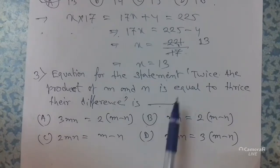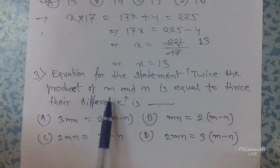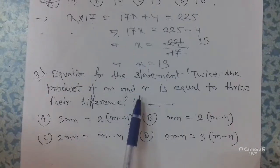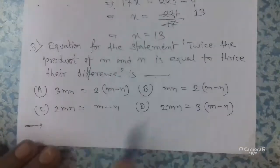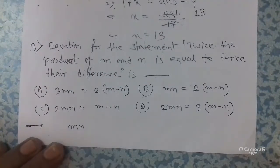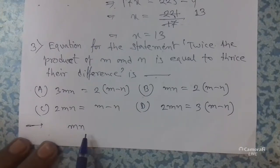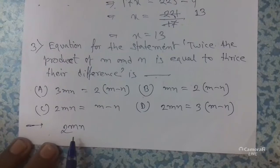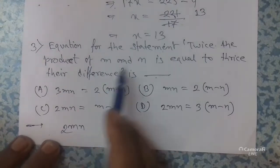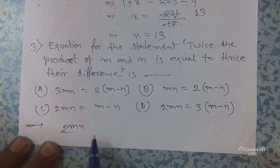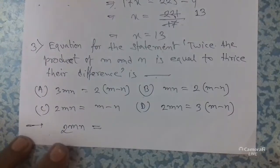The problem is: equation for the statement. What is the statement? Twice the product of m and n. Product of m and n is m into n, that means mn. And twice the product of m and n is 2mn. Twice means multiply by 2. So twice the product of m and n is 2mn, equal to the thrice of their difference.